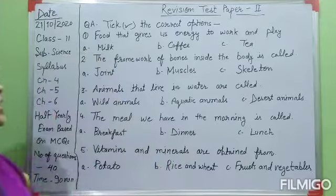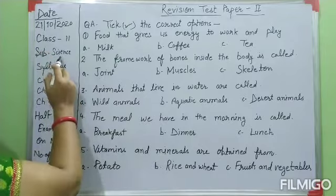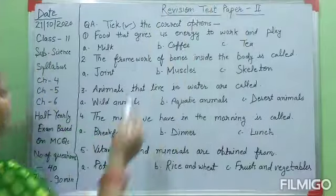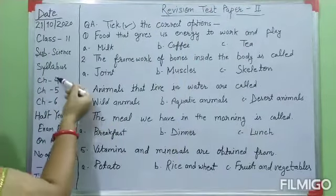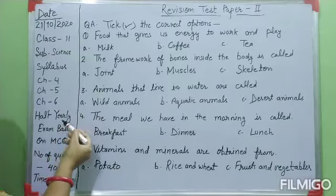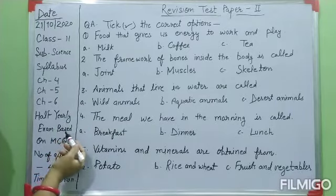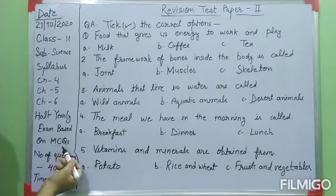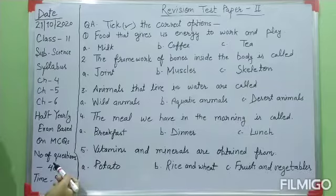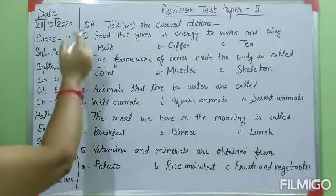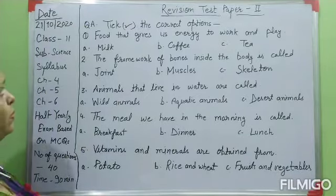Good morning students! Today in science class, I will give you revision test paper 2nd. This is your syllabus: chapter 4, chapter 5, and chapter 6 in your half-yearly examination. Your half-yearly examination is based on MCQs. The number of questions in the science subject is 40 and your time duration is 90 minutes. Let's start your revision test paper — your mock test paper.